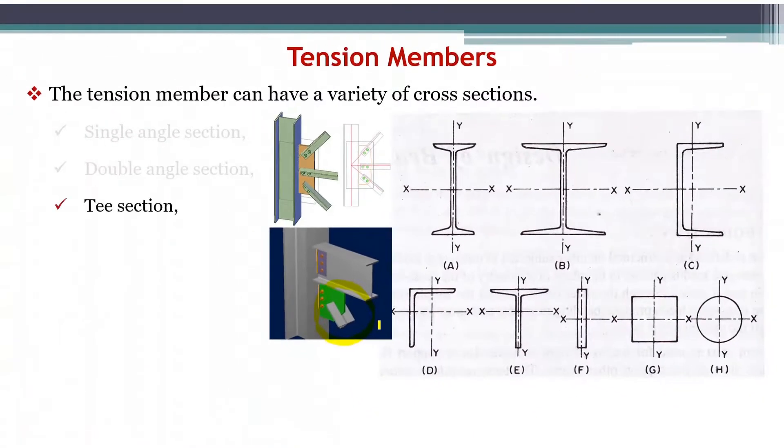Double angle section, T section, channel section, I section, and built-up section. This is a built-up section: two angles are connected together to act as a single tension member. We use more than one rolled section to form a single rigid section.